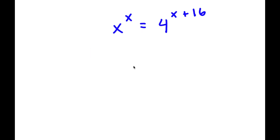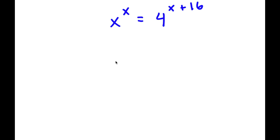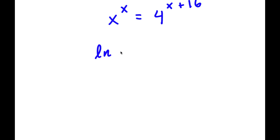In this problem I have x to the power of x equals 4 to the power of x plus 16. The first thing I'm going to do is take the natural log on both sides. So now I have ln of x to the power of x equals ln of 4 to the power of x plus 16.